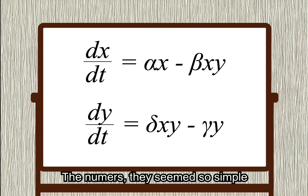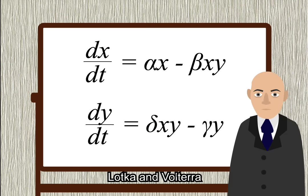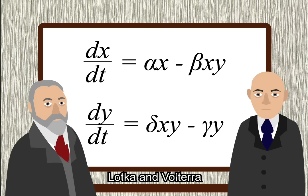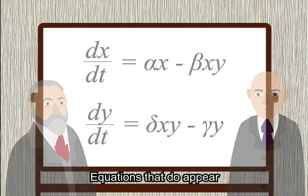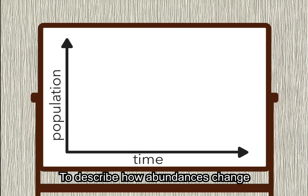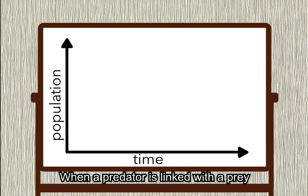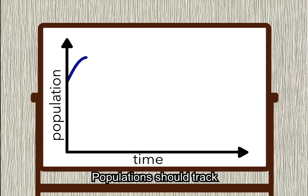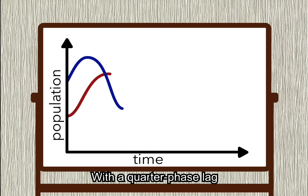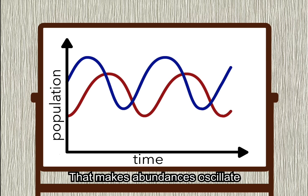The numbers, they seem so simple. The math, it was so clear. Lotka and Volterra came up with a pair of equations that do appear to describe how abundances change, when a predator is linked with a prey — population should track with a quarter phase lag that makes abundances oscillate.